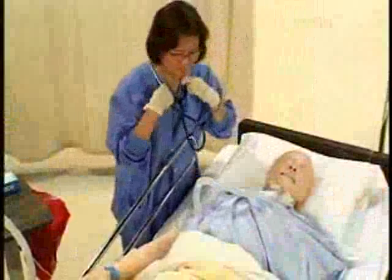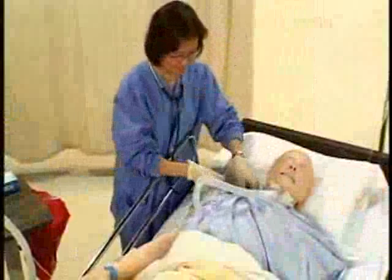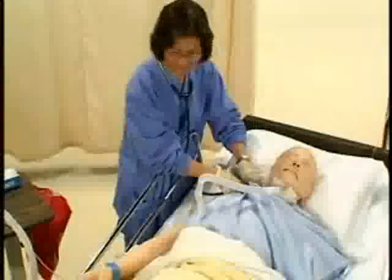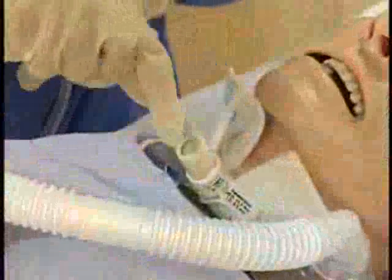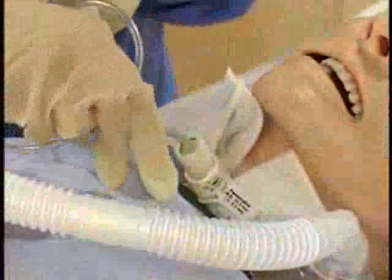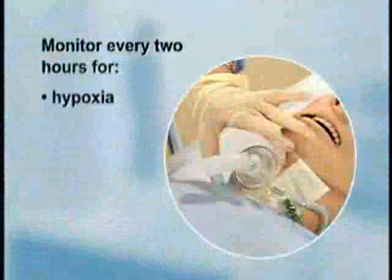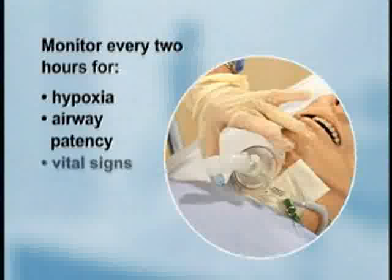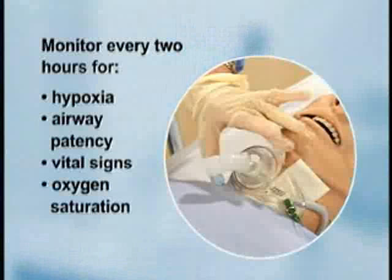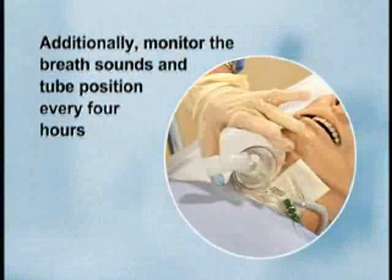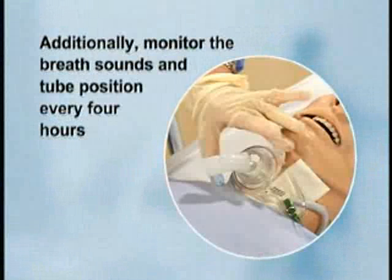Check for proper flow rate and patency of the system every one to two hours, depending on the acuity of the client. Suction as needed to maintain a patent airway. Monitor for signs and symptoms of hypoxia, airway patency, vital signs, and oxygen saturation every two hours. Additionally, monitor breath sounds and tube position every four hours.